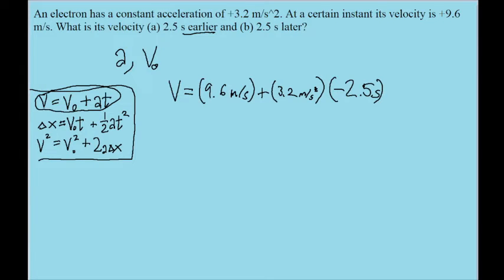So if we put this into our calculator with negative 2.5 seconds, then we find a velocity of 1.6 meters per second. So that is the velocity of the particle 2.5 seconds before its velocity is 9.6.